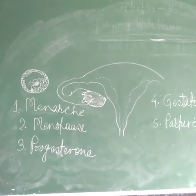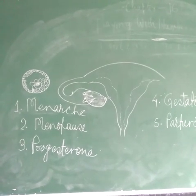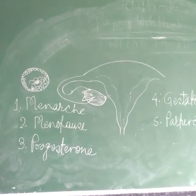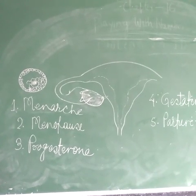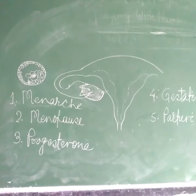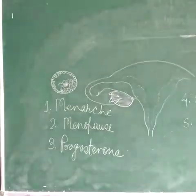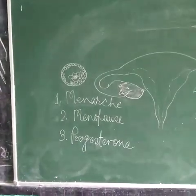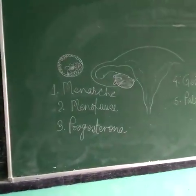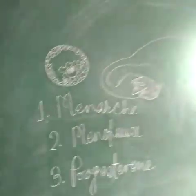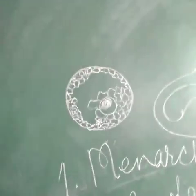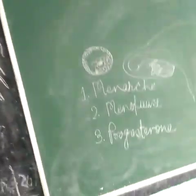Because of these hormonal changes, the Graafian follicle that is present and keeps on growing and maturing inside the ovary ruptures, and the ovum is released. Just below the diagram you can see the spherical structure representing the ovum.